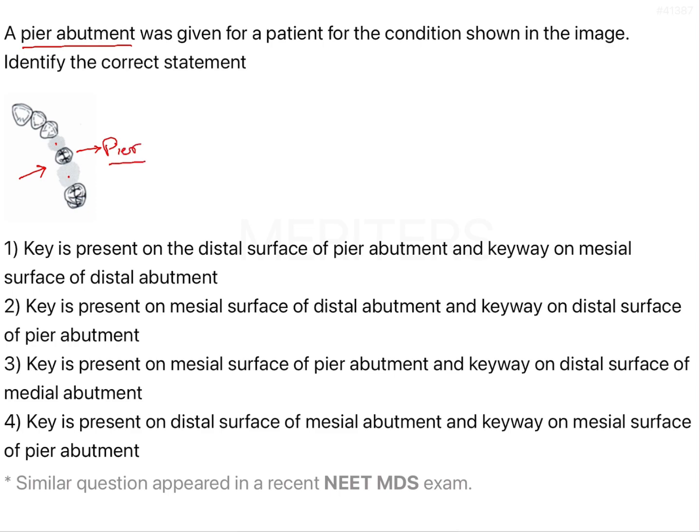A pier abutment is nothing but an abutment which has edentulous spaces present mesial and distal to it, basically on both sides.